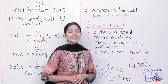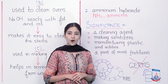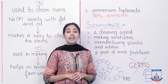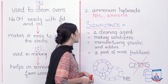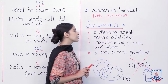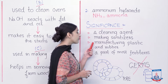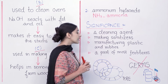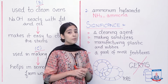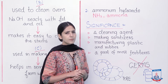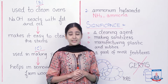The second example is ammonium hydroxide, also called ammonia, with the formula NH₃. Ammonia is used as a cleaning agent, in making sanitizers, in the manufacture of plastic and rubber, and it is a part of most fertilizers. Ammonia is used for cleaning purposes partly because of its reaction with fat and oil.